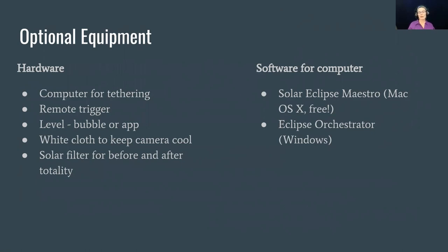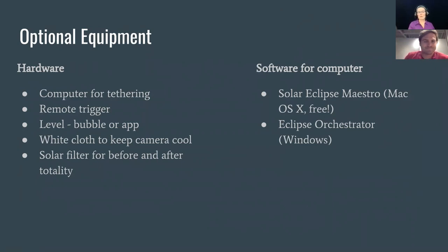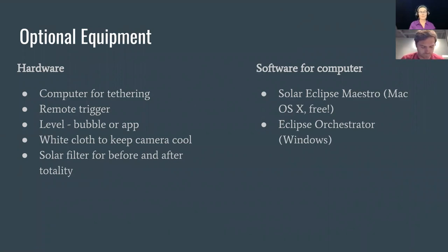You'll probably want some kind of level — a bubble level or an app. On your phone, if you search in Google for 'bubble level,' it should open one right there in the browser. You'll want to level your tripod when you first set up. It's also going to be August and many of us will be in hot places, so you'll want some way to keep your camera cool. A white cloth is plenty sufficient to keep most cameras cool for the day.